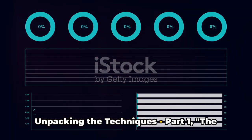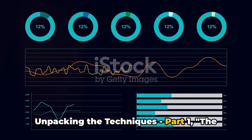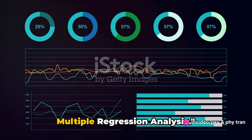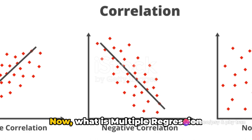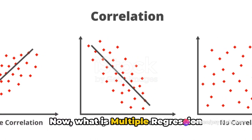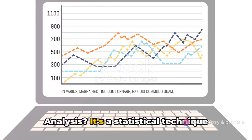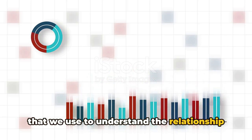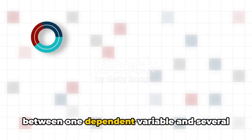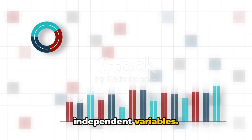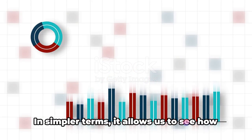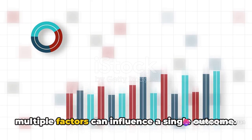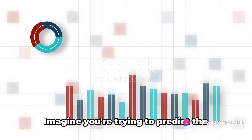Unpacking the Techniques, Part 1. The first technique we are going to explore is Multiple Regression Analysis. What is multiple regression analysis? It's a statistical technique that we use to understand the relationship between one dependent variable and several independent variables. In simpler terms, it allows us to see how multiple factors can influence a single outcome.